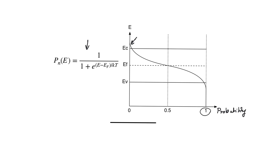It is important to notice that the Fermi-Dirac function is a conditional probability. It tells us the probability that we will find an electron at a certain level, given that there is a valid energy state for the electron to reside in at that level. The Fermi-Dirac function has a finite value within the forbidden gap, but this doesn't mean we will have electrons at these levels — only that if there were levels within the forbidden gap, there would be a probability of finding electrons there.